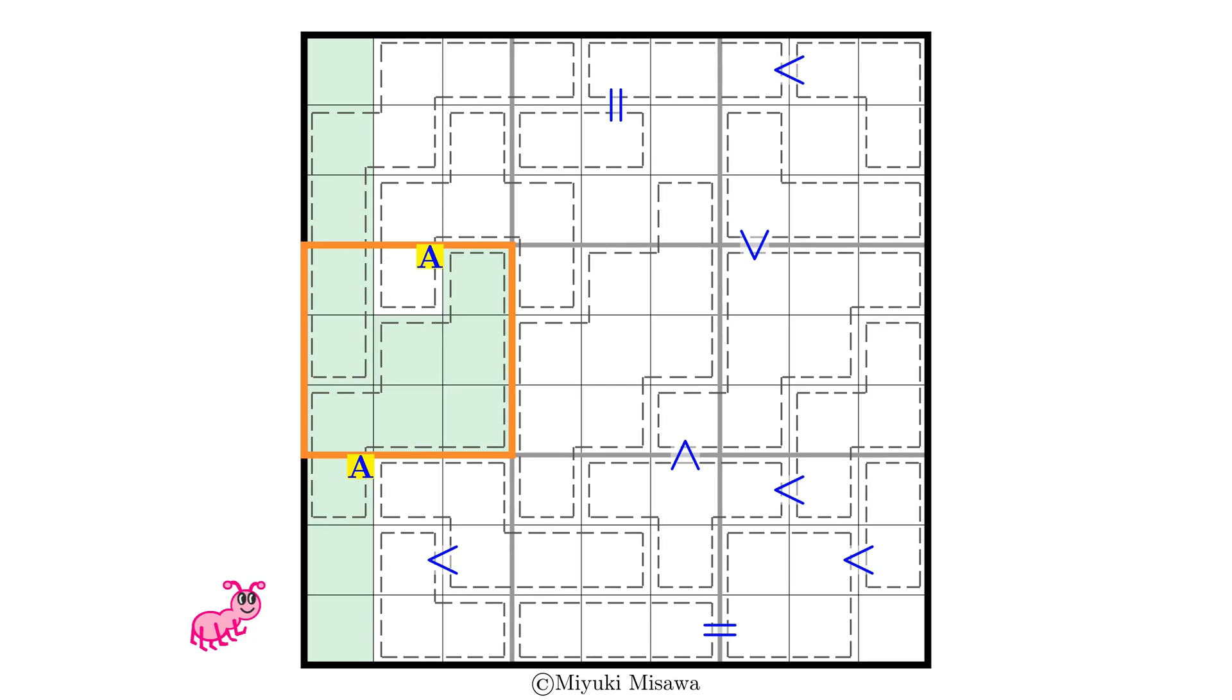Now it can't be elsewhere in the second column either, nor in the other cage it's already in. But it still needs to be somewhere in the topmost box, where there's only one place left again.